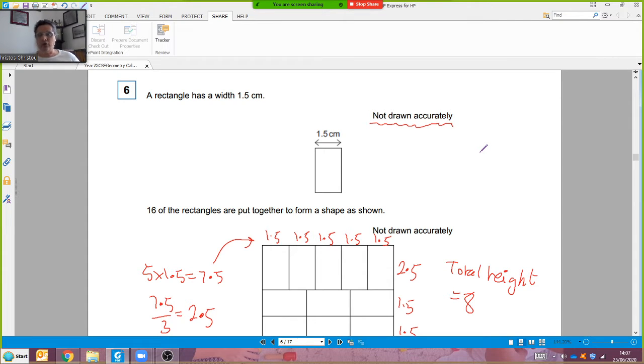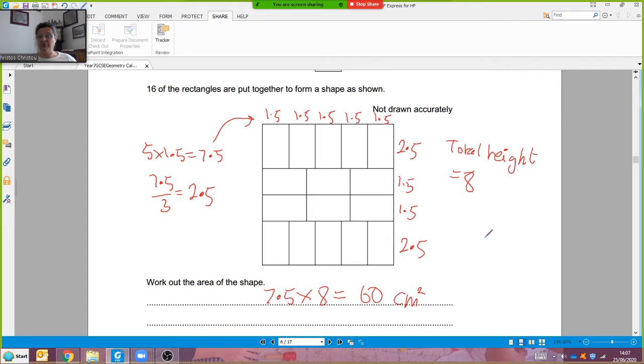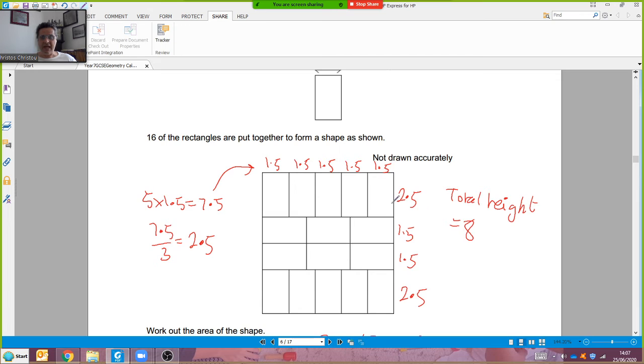I've got to work out ultimately the area of this shape. I've got to work out the width across here and the height across here. So if you're given a picture the wise thing to do is to put the numbers on the picture that you know. I know each of these are 1.5, and I've got five of them.